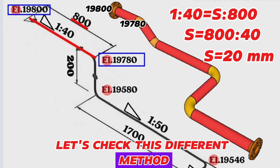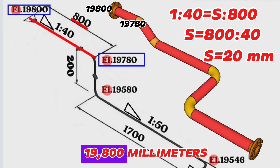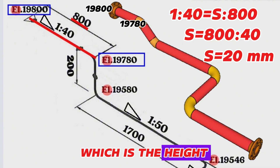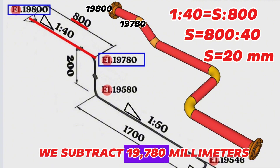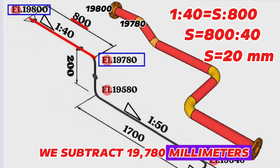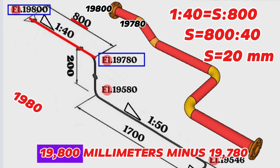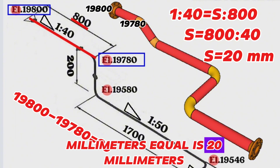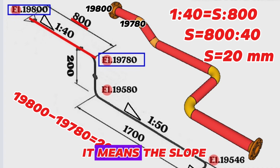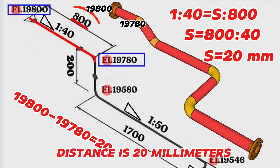Let's check this with a different method using elevation levels. From 19,800 millimeters, which is the height level of the starting point, we subtract 19,780 millimeters, which is the height level of the downward turn point. 19,800 minus 19,780 equals 20 millimeters. It means the slope of the pipeline over 800 millimeters distance is 20 millimeters.